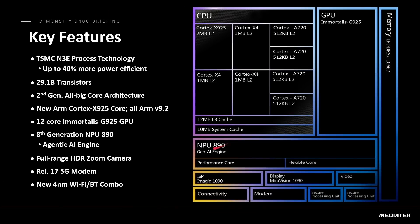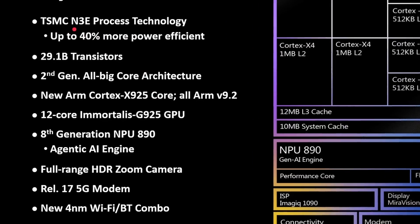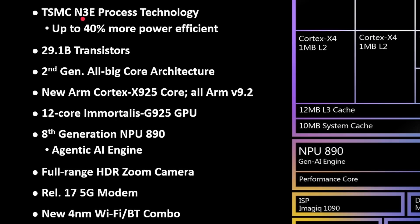There's also LPDDR5X RAM, the neural engine, connectivity, display, and image signal processor. On the left of the diagram, we've got the TSMC 3-nanometer process and 29.1 billion transistors — actually 28% more than the Dimensity 9300, and a lot of that is going to be in the increased cache sizes. This is the second generation of all-big-core architecture, now with the X925, the latest generation NPU, and an updated modem.